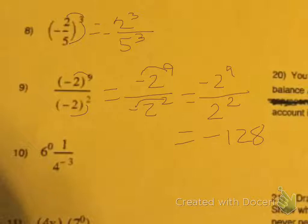Number 10, we have 6 to the power of 0, so we have to use our power of 0 rule — that becomes 1. Then we have negative exponents that moves everything to the top, so we have 1 times 4 to the 3rd, which equals 4 to the 3rd.